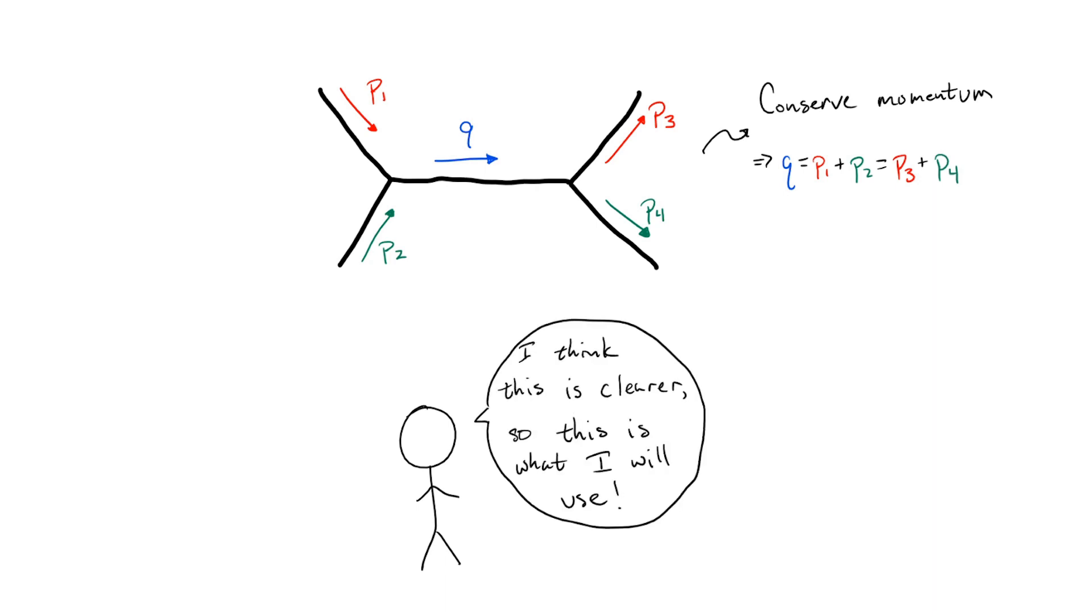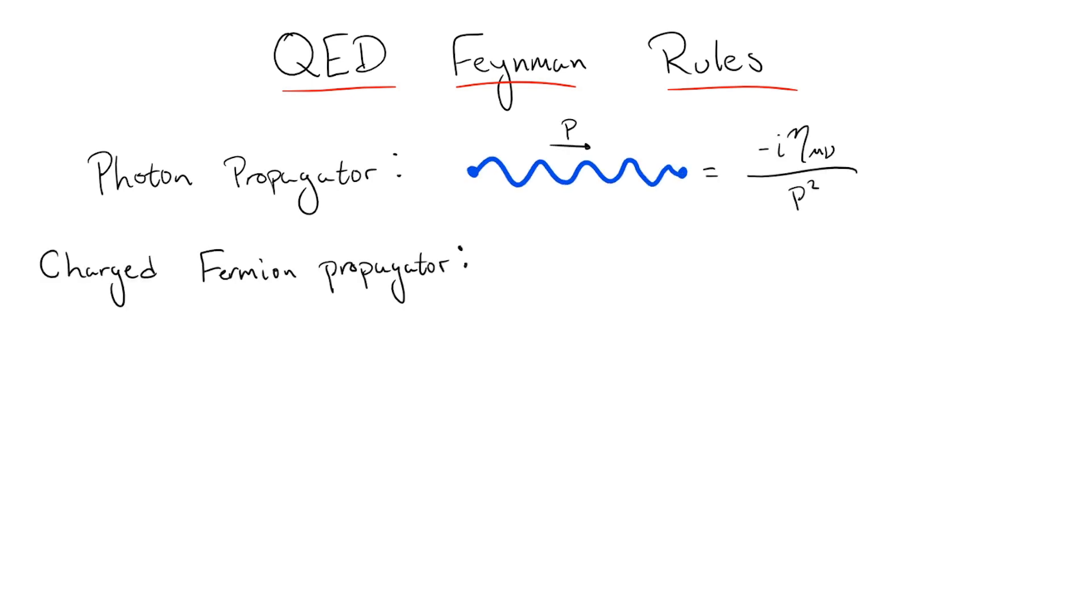Let's take a look at how this works in quantum electrodynamics. In QED, we have three main building blocks, the propagator for the photon, which we will represent by a wavy line, the propagator for the charged fermion, represented by a solid straight line with an arrow on it, and a vertex where two fermions meet with the photon.